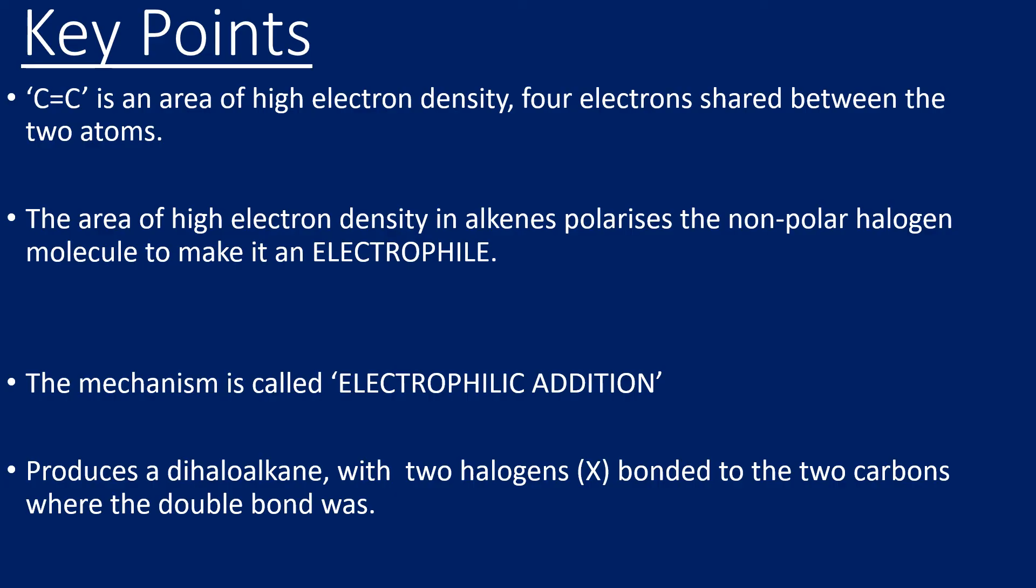Because you end up with the two identical halogens bonded to both carbons, which is why we do not need to worry about major and minor product when we're adding a halogen.